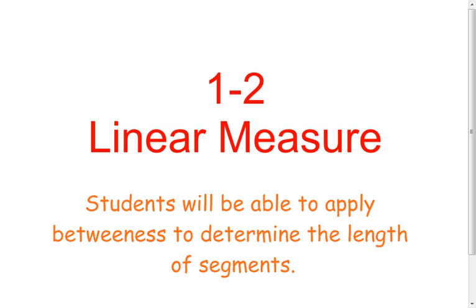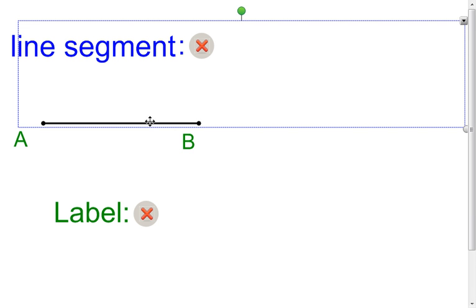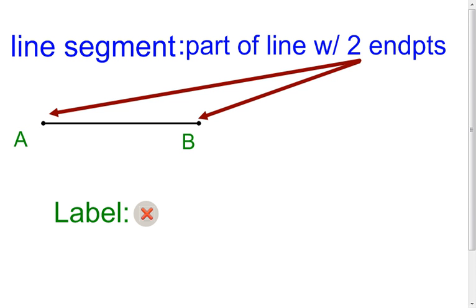So the first thing we're going to talk about here is a line segment. Now a line segment we're actually going to be able to measure. I have a picture of a line segment here, down here from point A to point B. But what a line segment actually is, it's part of a line. So take that whole line and cut off the two ends and you're left with a little chunk inside of it. And that's going to be considered the line segment. Notice it has two endpoints here. In mine it's point A and point B.